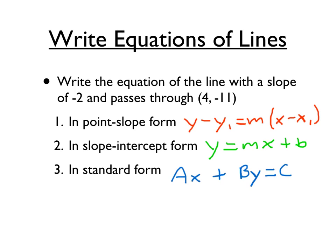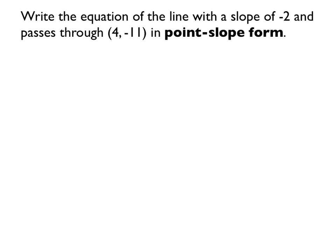So let's start with point-slope form. For point-slope form, we'll need the slope, which is negative 2. We'll need a point, which is 4 and negative 11. So let's substitute those numbers into that point-slope form.